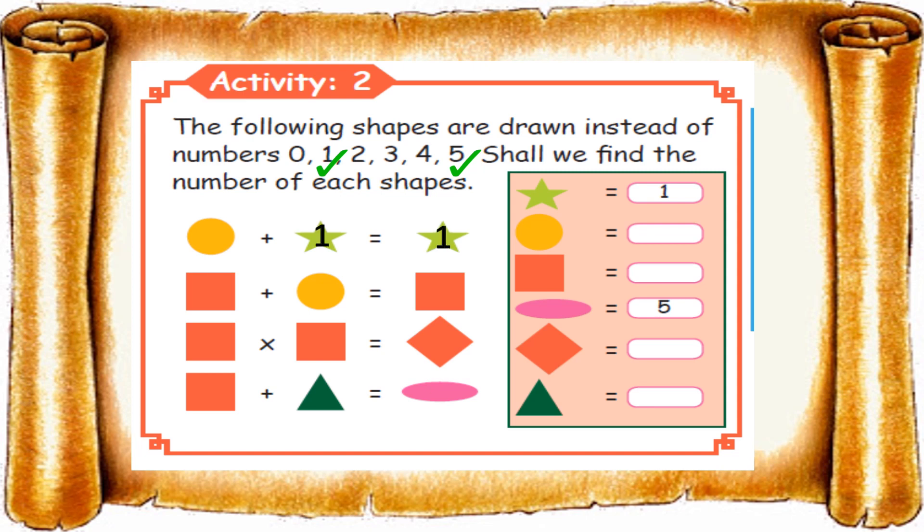Let's fix star as 1 and oval as 5. Now think: what number if we add with 1 will get as answer 1? Zero. Good. Zero plus 1 equals 1. So instead of circle, let's fix 0. Now we have found 0, 1, and 5. Remaining numbers are 2, 3, and 4.